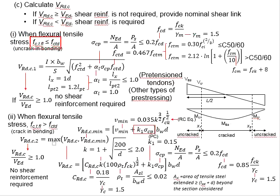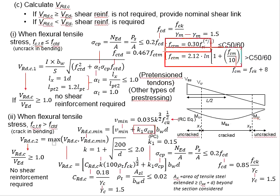Now let us look into the first situation — when the stress generated within the member is within the tensile capacity design strength. In this case, these formulas may be used. Here, I represents the second moment of area of the cross-section, bw represents the width of the web, S represents the section modulus, and fctd represents the design concrete tensile strength, which can be calculated from this formula.